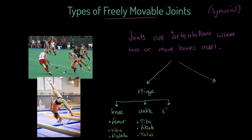For our hinge joints, we are also interested in the elbow. Here we get the joining of the humerus — the upper arm bone — articulating at the elbow. And then the two forearm bones: we have the radius and the ulna. Both are important because the bicep, which causes elbow flexion, inserts onto the radius, whereas the tricep inserts onto the ulna. So both are involved in movement at the elbow.